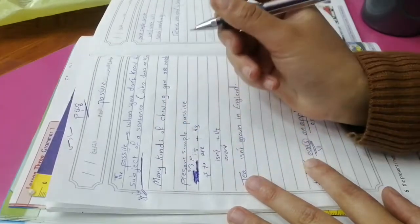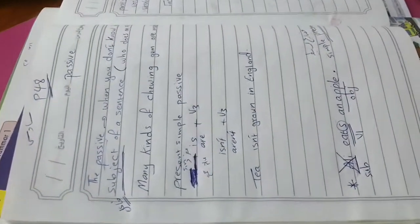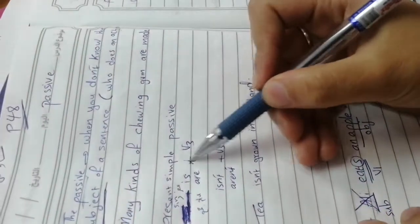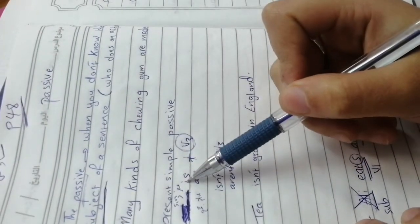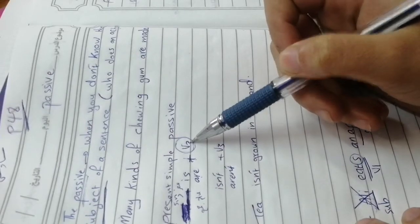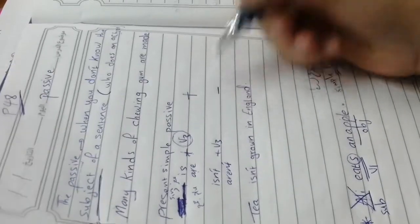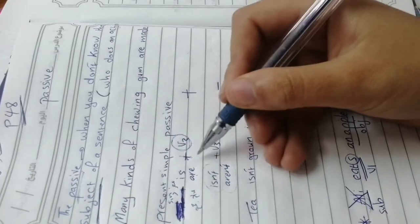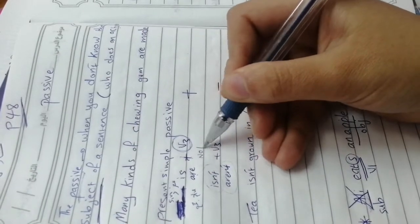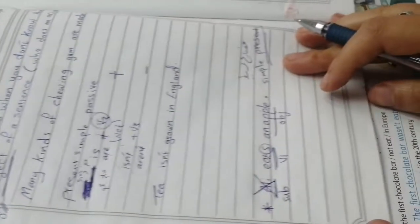معناته هاي عندي اياها singular وهاي عندي اياها plural. بدي أستخدم معاها برضو الـ verb three — يعني بدي أحط is أو are plus verb three. هاي بحالة الـ affirmative. بحالة النفي بدي أحكي isn't أو aren't plus verb three.